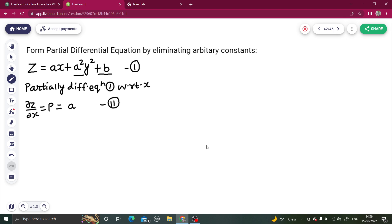Now we will repeat the same step but this time we will partially differentiate with respect to y, taking x as constant. You will get del z by del y, that will be equal to q obviously.